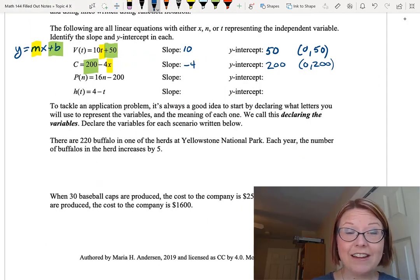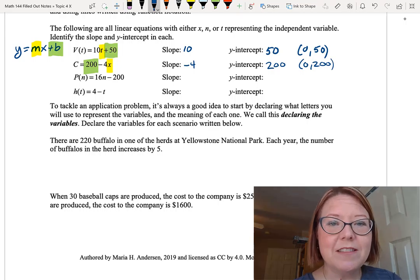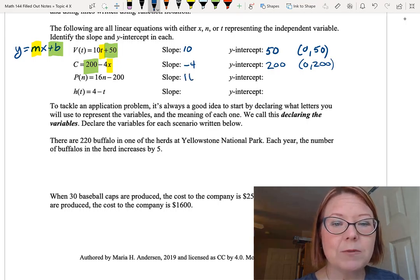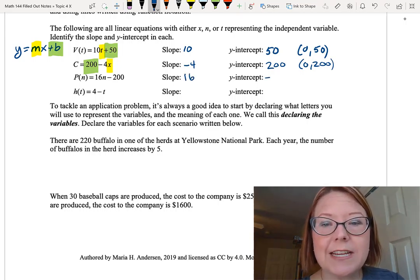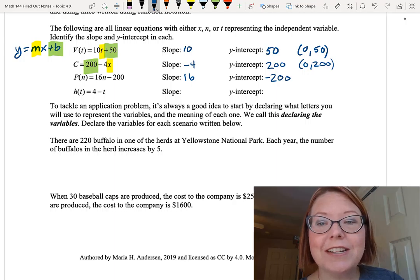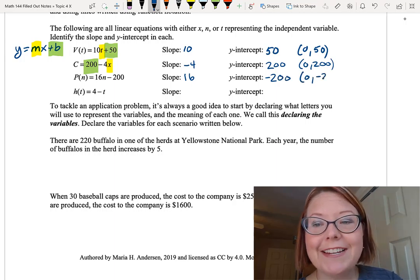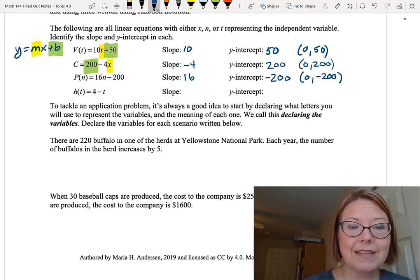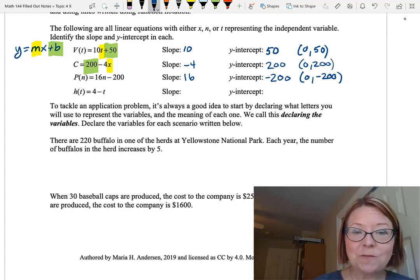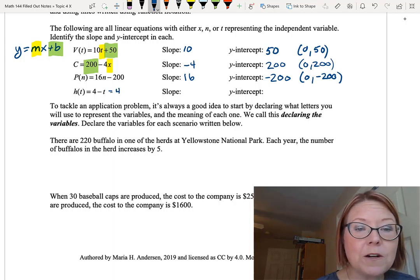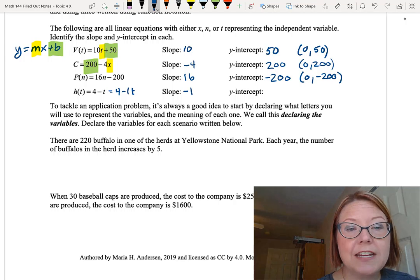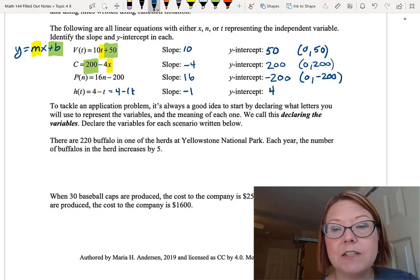Okay, hopefully you've given that a try. For p of n equals 16n minus 200, the slope is 16, the number in front of n, and the y-intercept is negative 200, so that's 0 comma negative 200. In h of t equals 4 minus t, the slope is the number in front of t, and in this case we could rewrite this as 4 minus 1t, so the slope is negative 1, the y-intercept is 4, or 0 comma 4.